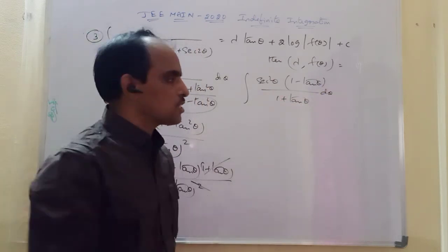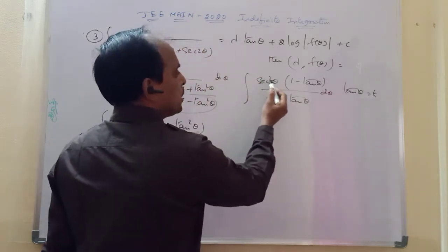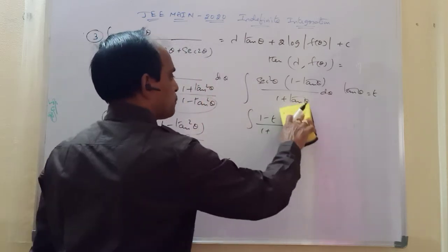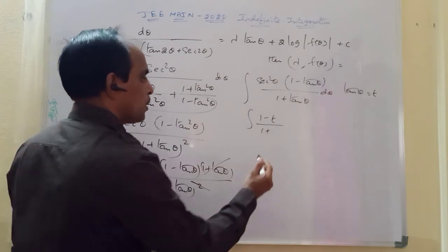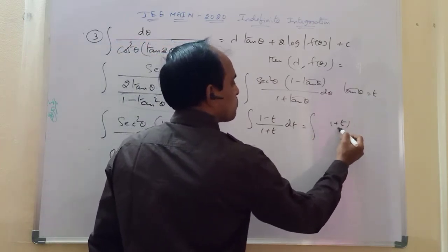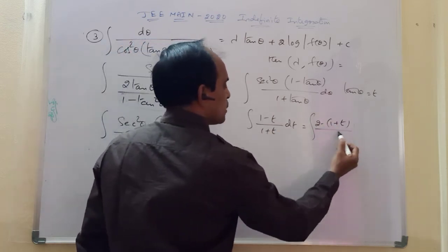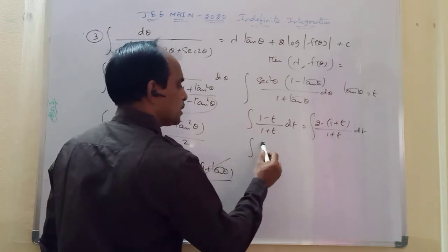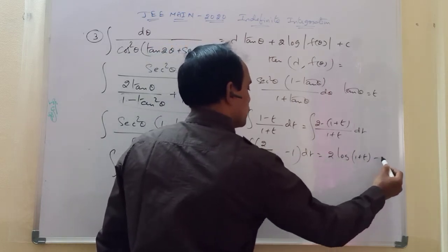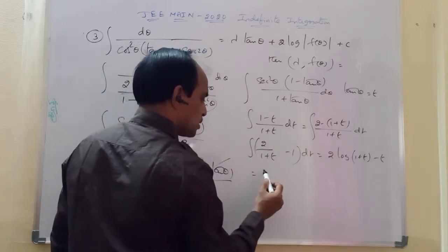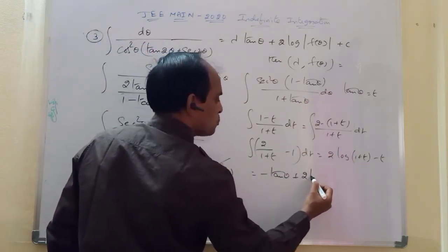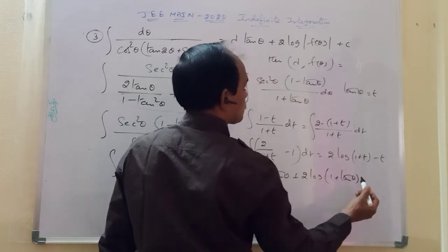Now let tan θ = t, so sec²θ dθ = dt. The integral becomes ∫(1 − t)/(1 + t) dt. Splitting: (1 − t)/(1 + t) = 2/(1 + t) − 1. Integrating gives 2·log(1 + t) − t, i.e., minus tan θ + 2·log(1 + tan θ) + c.